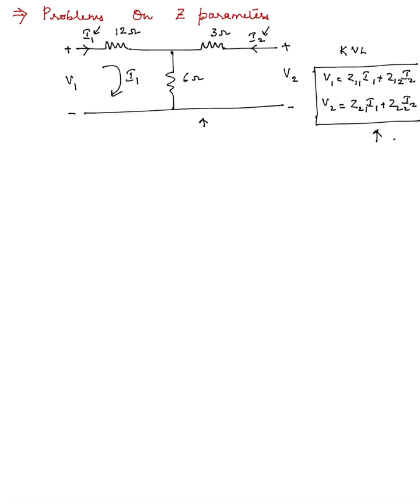I will take the loop current in the first loop as I1. This is I2. I have taken I2 in the anticlockwise direction because I2, the current mentioned here, is entering the circuit from outside. Even current I1 is entering the circuit. So I have taken the loop current or mesh current I1 and capital I1 and I2 with one clockwise and other anticlockwise in the direction of the branch currents I1 and I2.